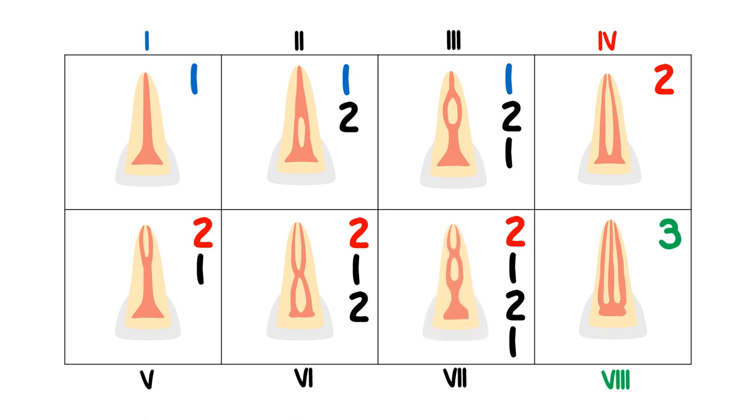And finally, Type 7 is 2 canals joining into 1 canal, splitting off again into 2 canals before uniting yet again into 1 canal before it hits the pulp chamber.